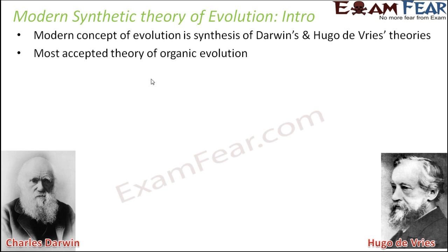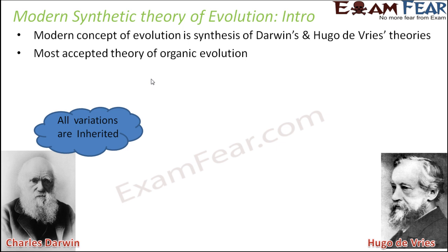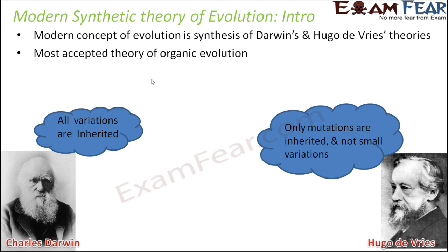On one hand, we have Charles Darwin's theory which says that all variations — small or big — are inherited and passed on from one generation to the next. On the other hand, Hugo de Vries' theory says that only mutations are inherited, not the small variations. Only when there is a big, major change due to a different genetic makeup do those mutations get inherited to the next generations. The synthetic theory is a mixture of these two theories, and that is why we call it the synthetic theory of evolution.